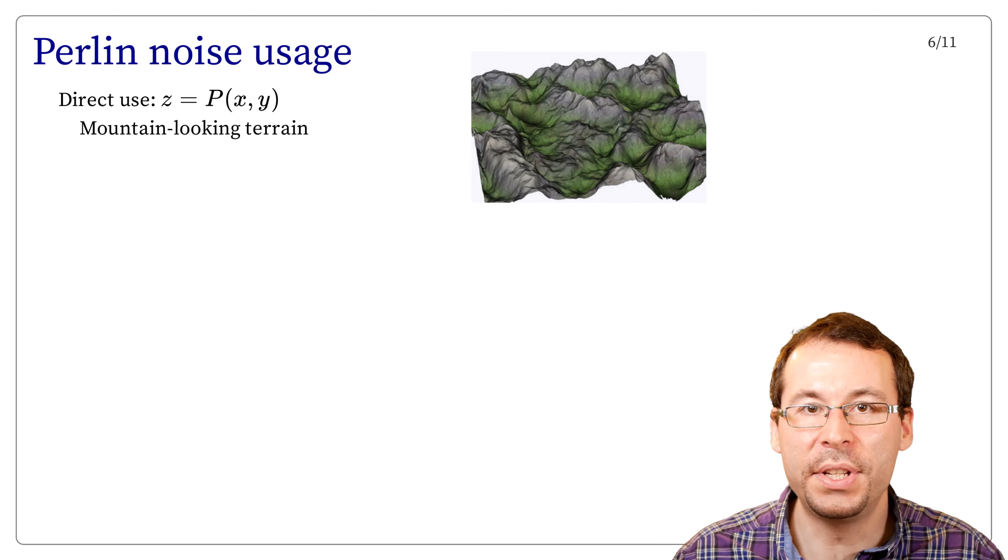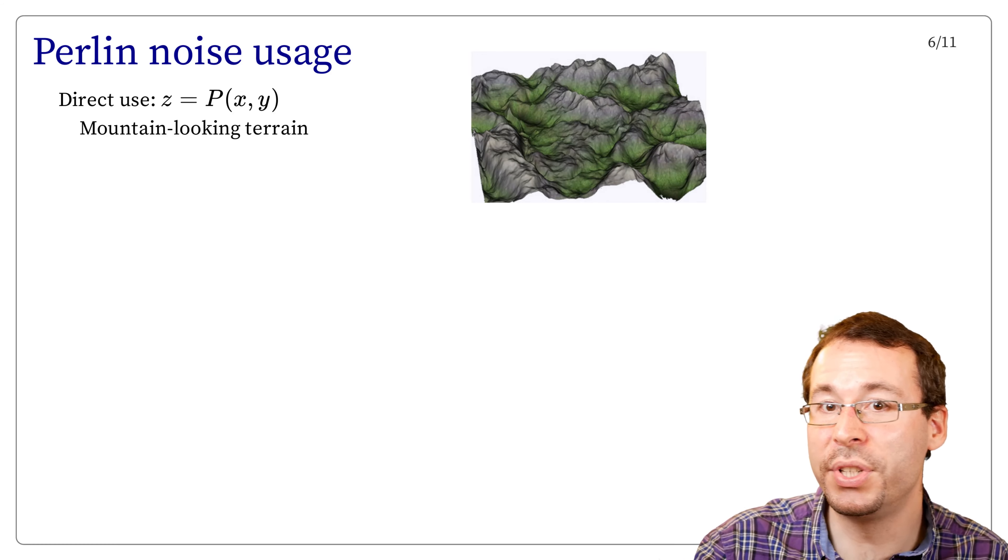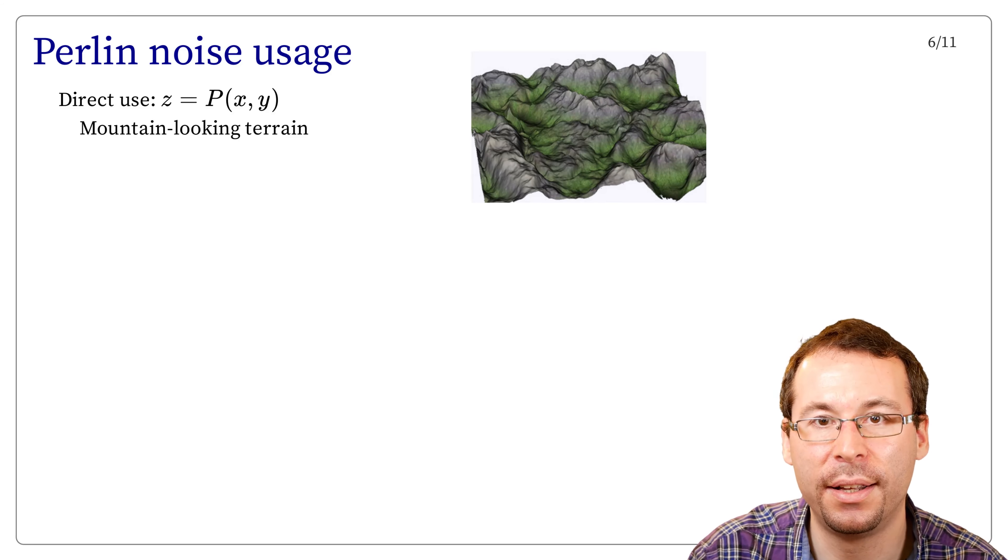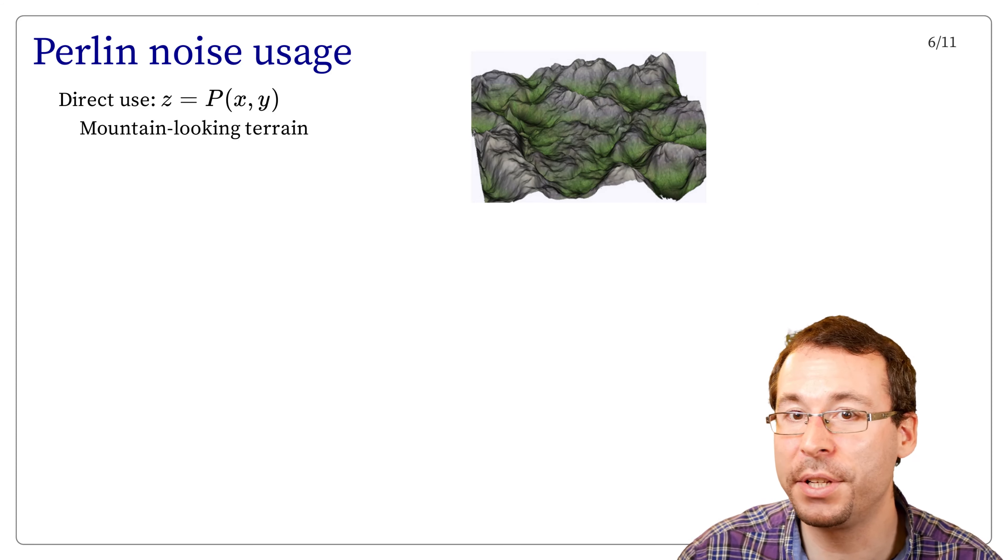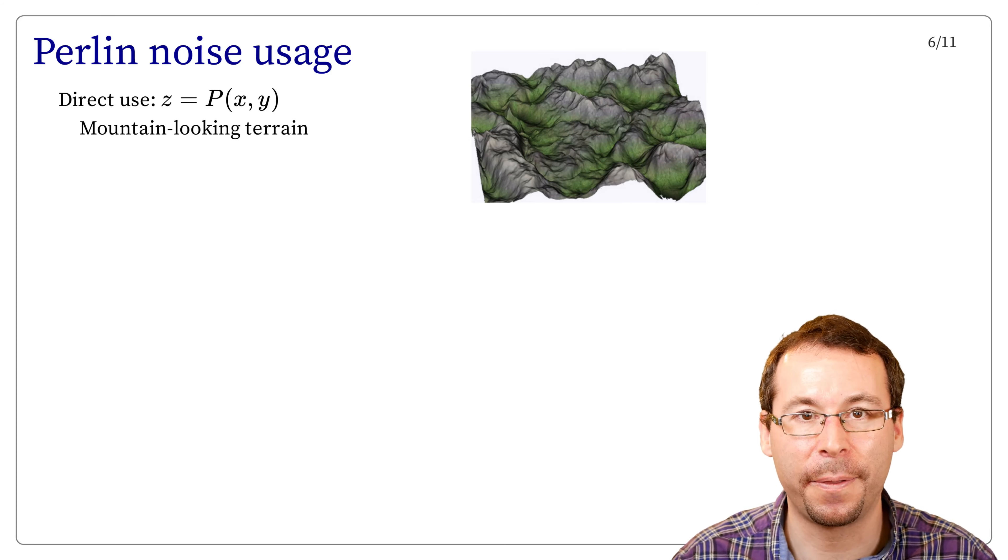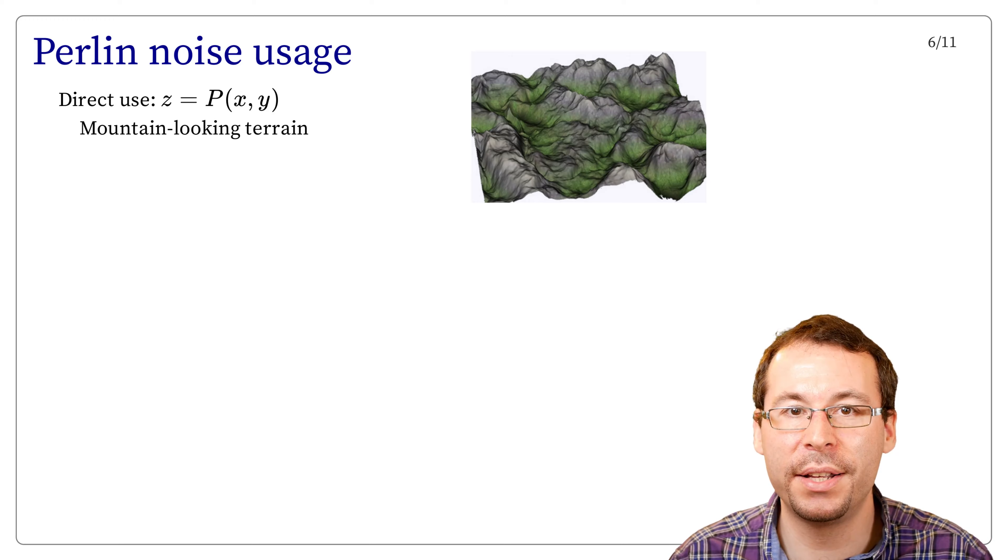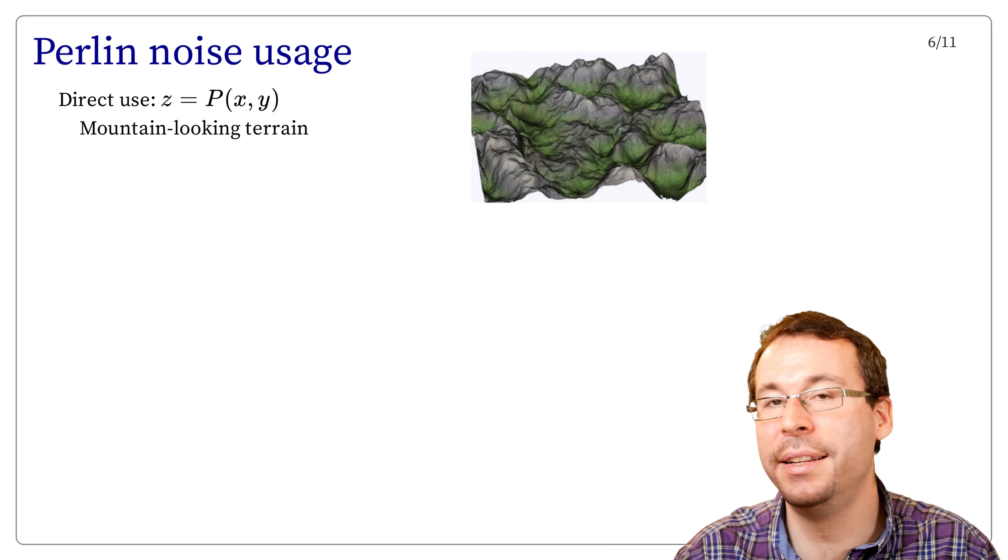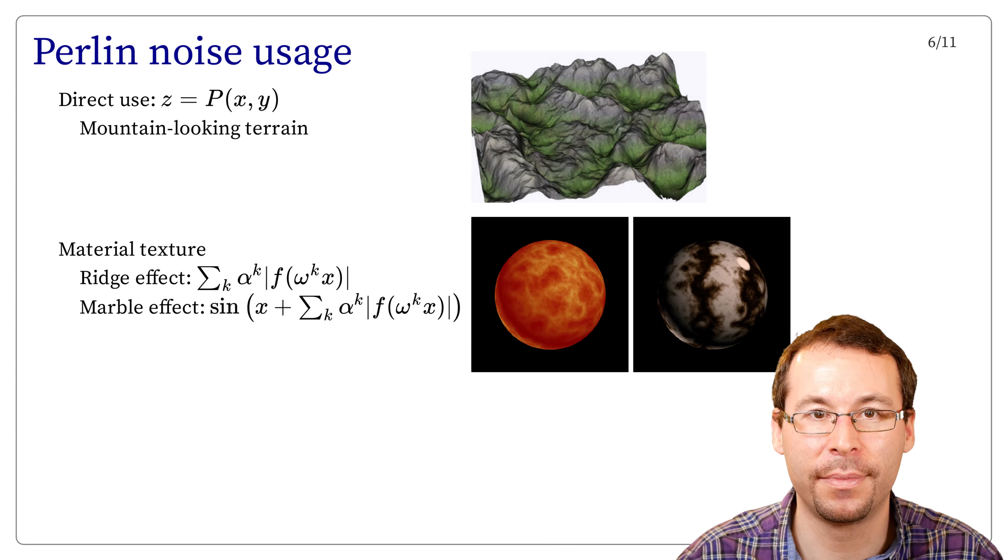So this is some typical use case of this Perlin noise. Basically, we can directly use its values and display it as a height-field surface. Then we directly get the representation that looks like a mountain. And using Perlin noise was, during a long time, the main approach to generate terrains in early video games.